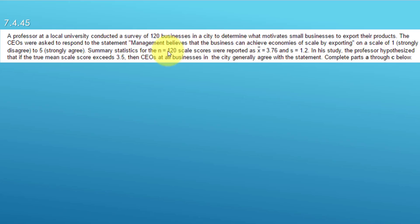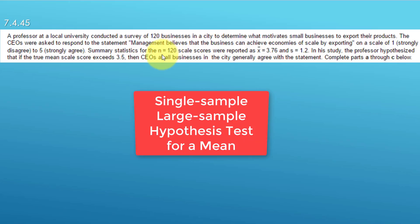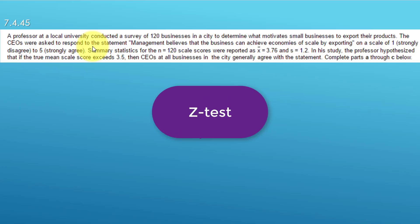Alright, so what do we have here? We've got a single sample, and it's a large sample. N is greater than 30. We've got an N of 120. So we've got a single sample, large sample. It's a single mean. That tells me this is a test of hypotheses for a single mean, large sample. Because it's a large sample and it's a mean, that tells me we can use the z-test to do this hypothesis test.